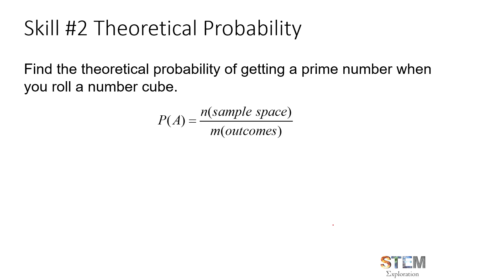Now I want to talk about theoretical probability, which is a little different. Theoretical probability is the probability of a random event happening based on what you have. Experimental probability is probably something you'll use more often, because if you're talking about things like touchdown passes or situations with too many variables, experimental is more applicable. But theoretical probability works well when you have a specific, well-defined random event — like whether a specific number is rolled or whether your sibling is a boy or girl.